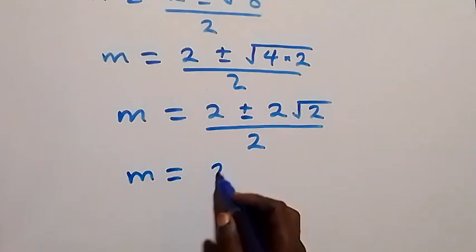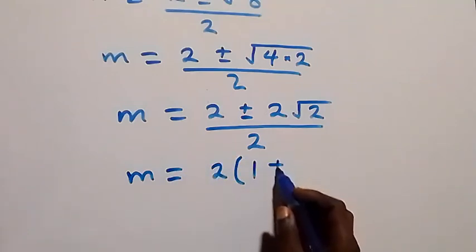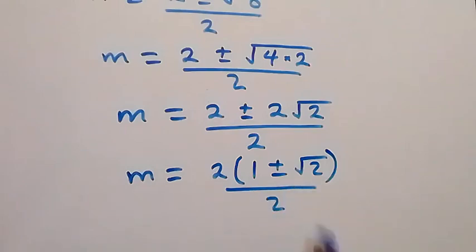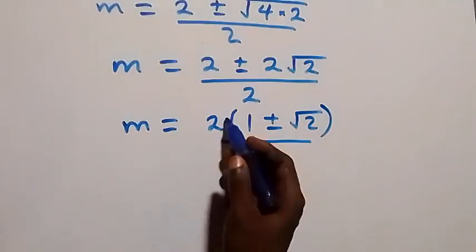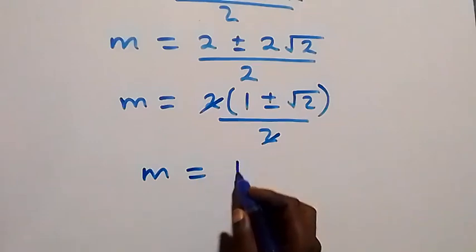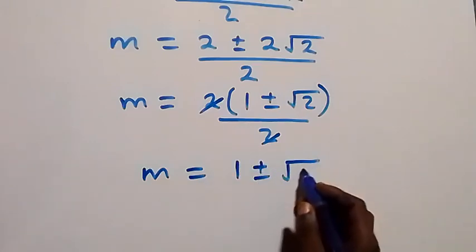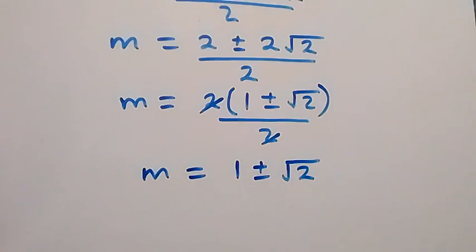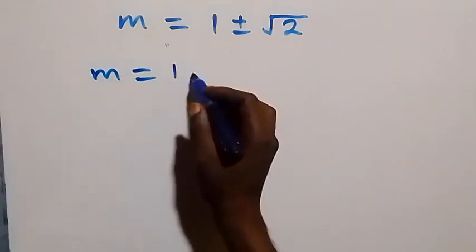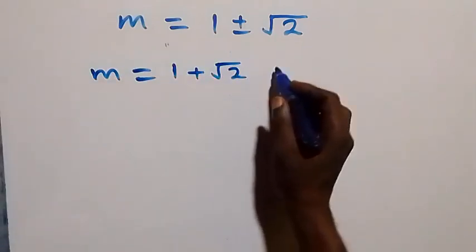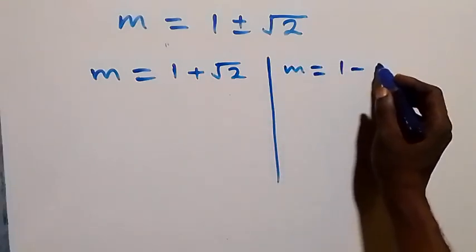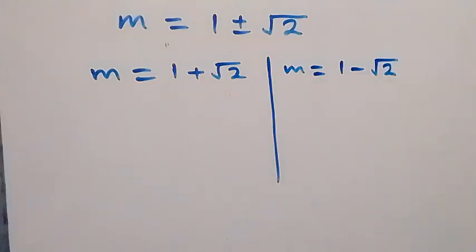Then 2 is common, so m equals 2(1 plus or minus root 2) over 2. Here 2 cancels and we have m equals 1 plus or minus root 2. That gives two values of m: the first is m equals 1 plus root 2, and the second is m equals 1 minus root 2.